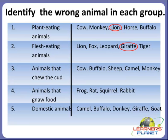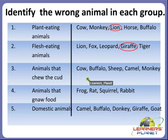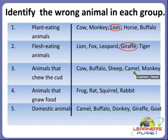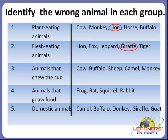Now the third one, children: the animals that chew the cud. Which are the animals that chew the cud? Cow, the fellow, sheep, camel, monkey. Which one is the wrong animal? Yes, it is the monkey. The monkey does not chew the cud.